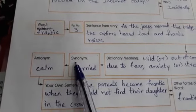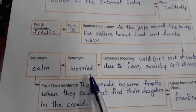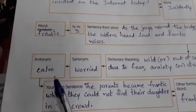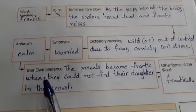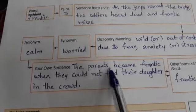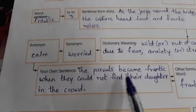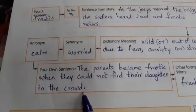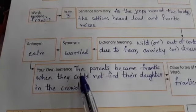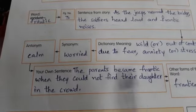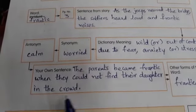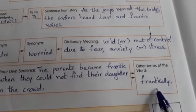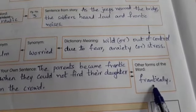The similar meaning — synonym — for frantic is 'worried.' The antonym — opposite — for frantic is 'calm.' And here I wrote my own sentence: 'The parents became frantic when they could not find their daughter in the crowd.' The other form to write for frantic is 'frantically.'